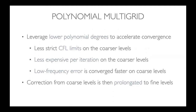Polynomial multigrid is similar in spirit to geometric multigrid. In PIFR, since we use flux reconstruction, we represent the solution with a high polynomial degree — say, a quartic or quintic polynomial. Similar to geometric multigrid where you use coarser grid levels with a second-order finite volume code, with polynomial multigrid we instead leverage lower polynomial degrees.